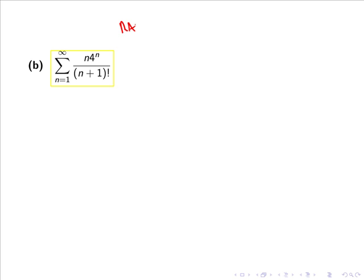The ratio test states that we take the limit as n goes to infinity of the absolute value of a_{n+1} divided by a_n. If this is greater than 1 it diverges, and if it is less than 1 it converges, while if it equals 1 the test is inconclusive and we must use another method.